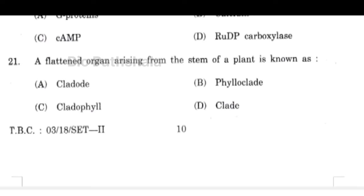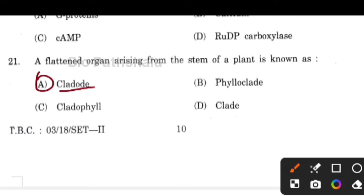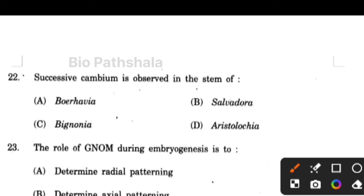Next question: a flattened organ arising from the stem of a plant is known as a cladode.